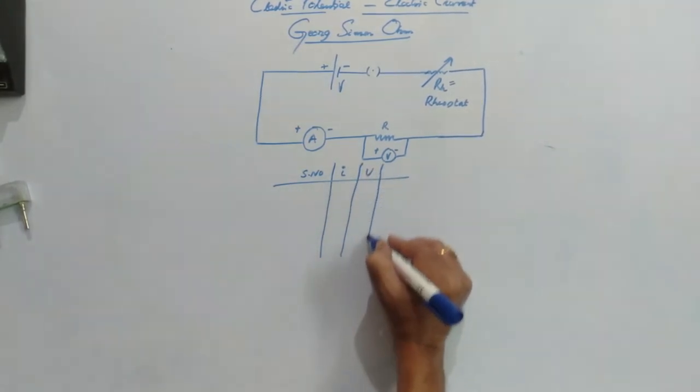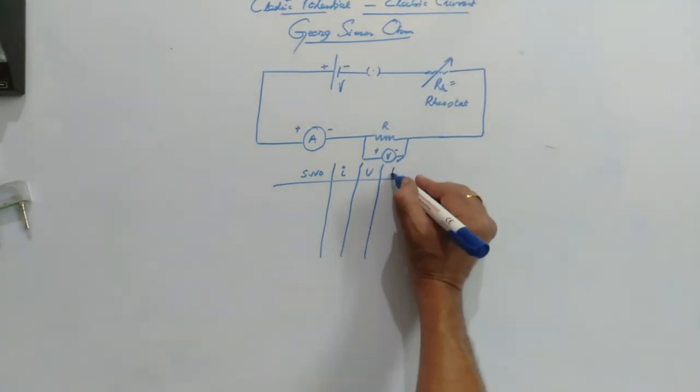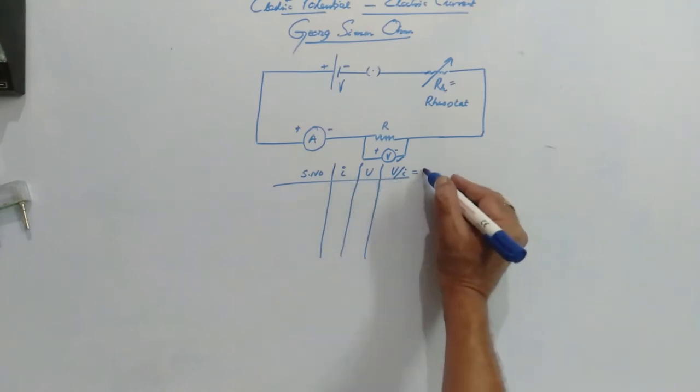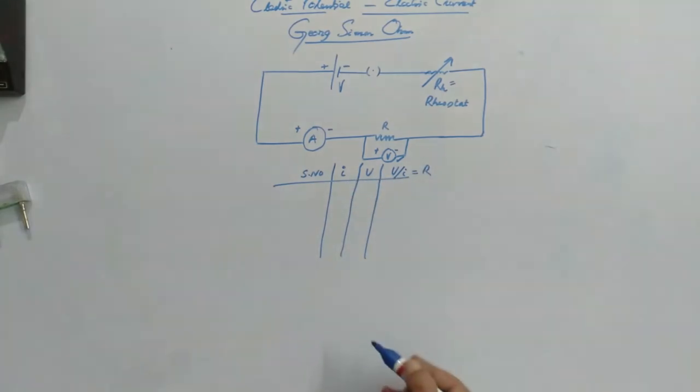potential difference through the voltmeter and we observe the ratio of potential difference to the current, which is nothing but resistance.